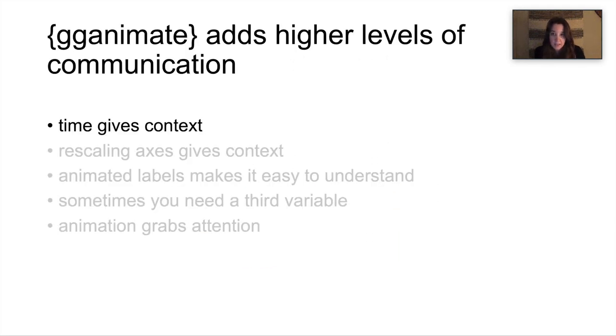ggAnimate adds higher levels of communication compared to just a static ggplot. First, you can use time to give context, especially when you're plotting things like COVID cases over time. You can rescale the axes and this helps drive home things like exponential growth even more for people who aren't used to looking at data. You can use animated labels to make it easier to understand and capture people's attention in the half second they're going to think about your post when they're scrolling through Facebook or Twitter. And sometimes you just need a third variable, and you can do things with ggAnimate that you just can't do in a 2D static plot. And then finally, having data move just grabs attention when you're sharing it online, which definitely helps.